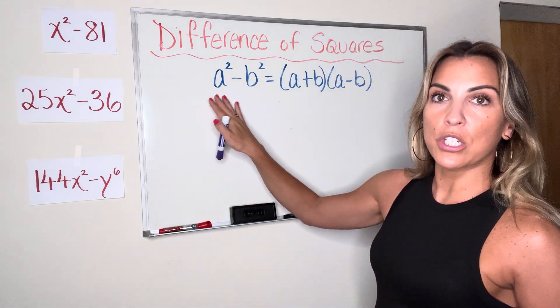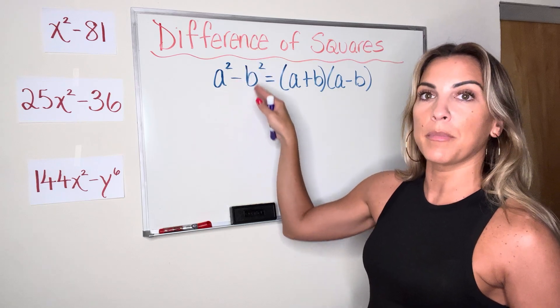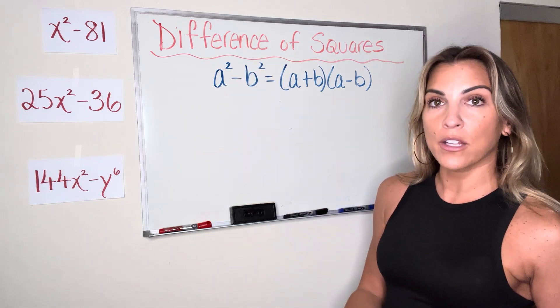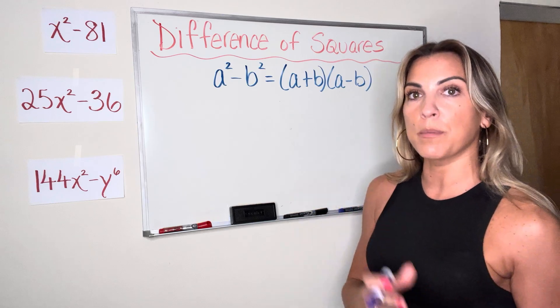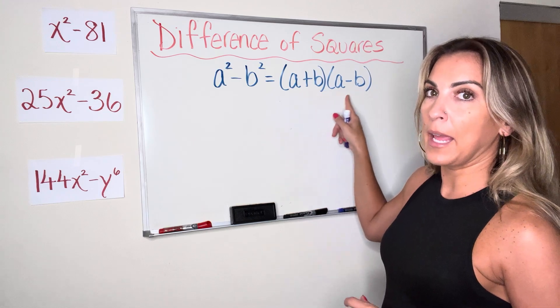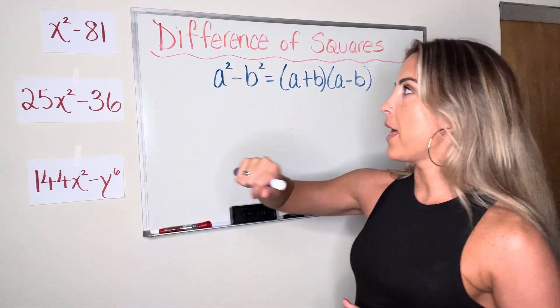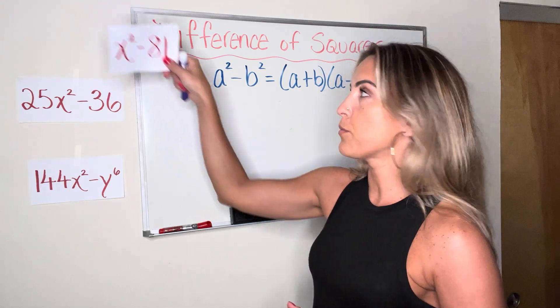So if you have an expression in the format of a squared minus b squared, something squared minus something else squared, then the way to factor it, the way to rewrite it as a multiplication problem, would be to write it as a plus b multiplied by a minus b. So we're going to see this formula in action in these three examples, and then I will leave you with some practice problems.